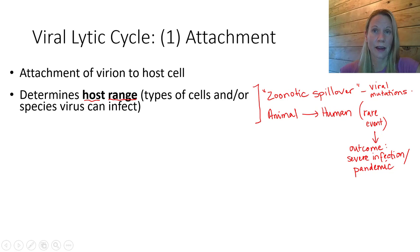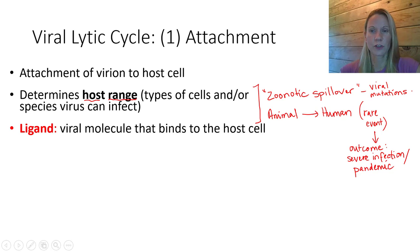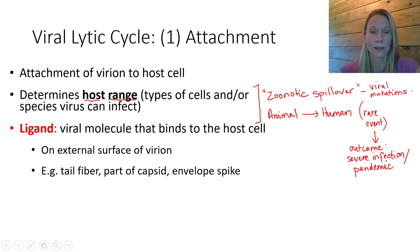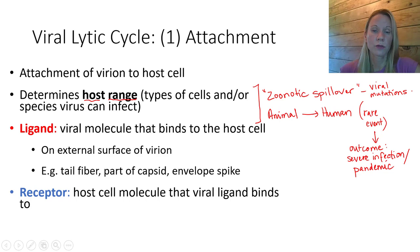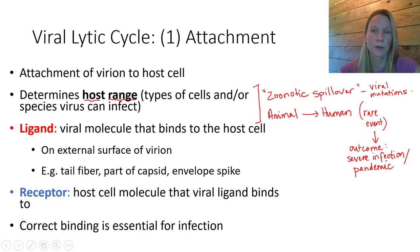We use some terminology to describe the interaction between a virus and its host cell. The term is ligand — a ligand is a viral molecule that binds to the host cell. It's anything on the exterior of the virion: a tail protein, part of the capsid in a naked virus, or an envelope spike. The receptor refers to the host cell molecule that the viral ligand binds to, and the correct binding is essential for that infection. Let's look at an example of this on the next slide.